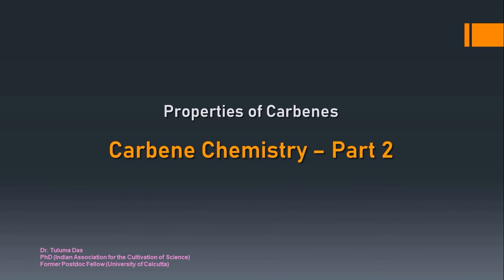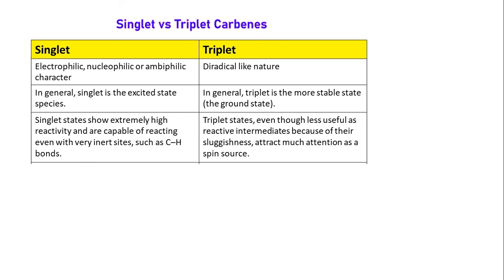Hello everyone. In Part 1 we have seen types and structure of carbenes — for Part 1 please click on the link appearing on the screen in the top right corner, and also check the important playlist link in the description box. Properties of carbenes is Part 2, today's topic. First we will compare singlet versus triplet carbenes, and also see why their names are so — why we call singlet as singlet and triplet as triplet.